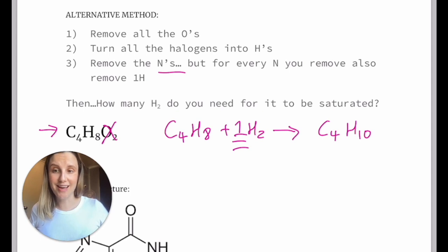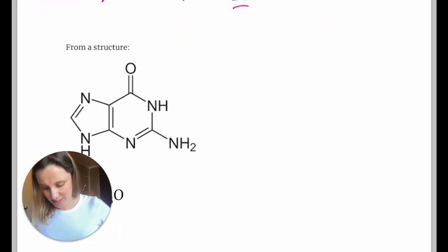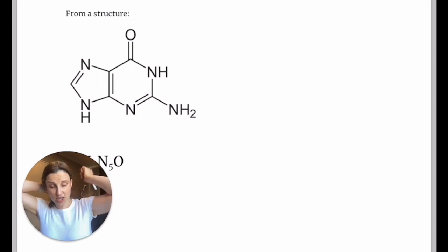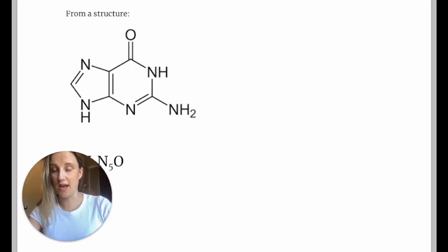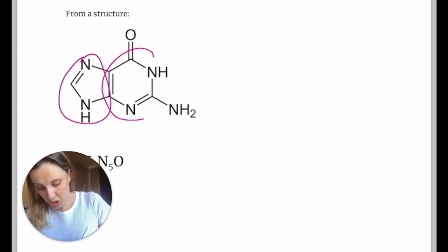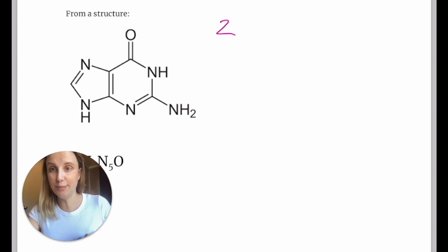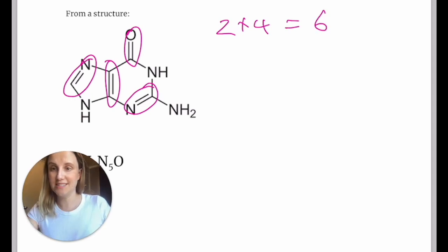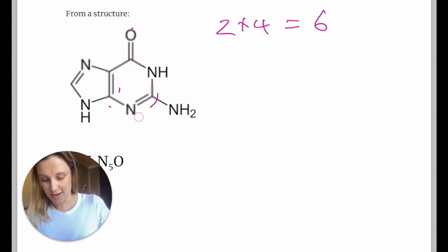Let's have a look at another example. So this is guanine. I'm going to do it from the structure first, just to practice. Now, so here you can see I've got two rings. So I've already got two from the rings, and then I'm going to count the double bonds. I've got one, two, three, four. So I'm expecting my IHD to be six overall. It's nice and easy when they give you the structure. It's less easy when they don't.